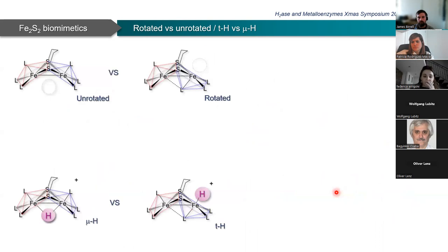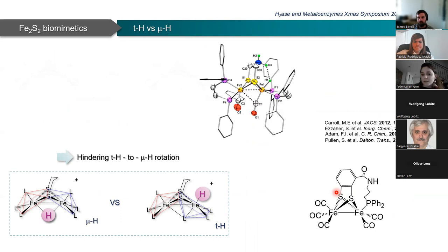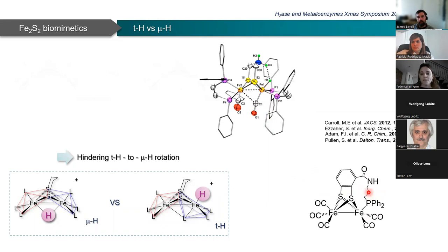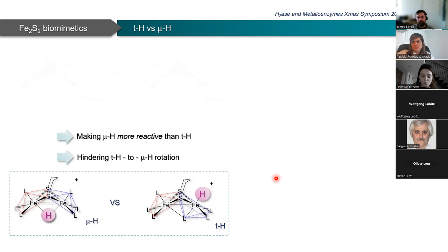For the hydride issue, many attempts have been made by several experimental groups trying to hinder the rotation of transiently formed terminal hydrides. This can be done, for example, with steric tricks using very bulky chelating phosphine ligands, or by strategies proposed by Ott, such as tethering one ligand to the dithiolate. But in an investigation some years ago, we were asking a different question: is it possible to increase the reactivity of bridging hydrides that are formed? What are the characteristics and features needed to make a bridging hydride reactive?